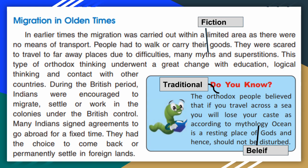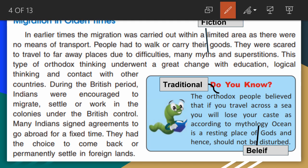Next: migration in olden times. In earlier times, migration was carried out within a limited area as there were no means of transport. People had to walk or carry their goods. They were scared to travel to faraway places due to difficulties, many myths and superstitions — underline 'myths' and write the meaning: fiction. This orthodox thinking underwent a great change with education, logical thinking, and contact with other countries.